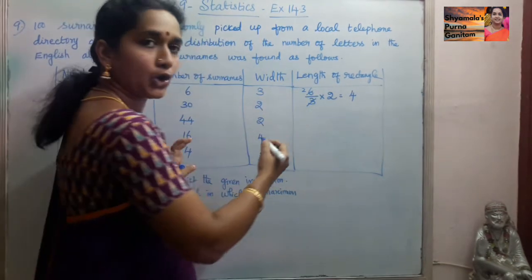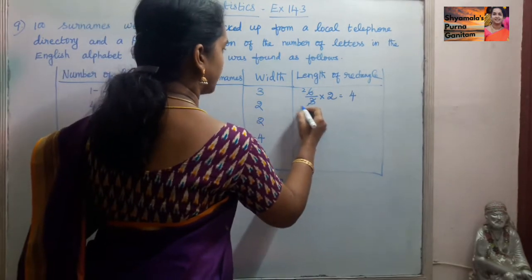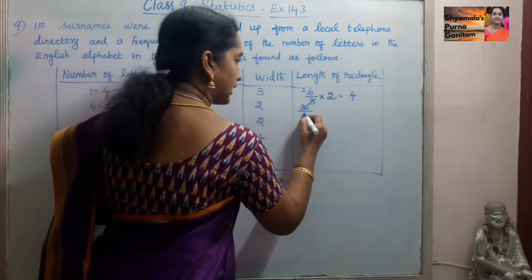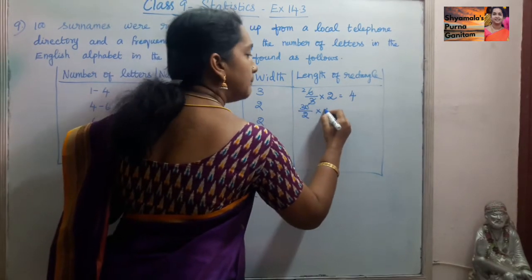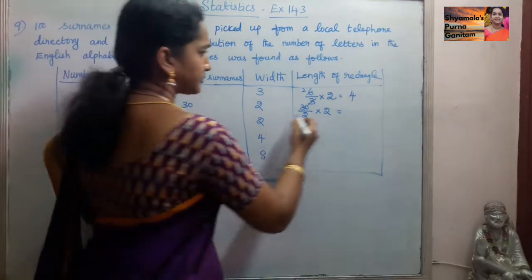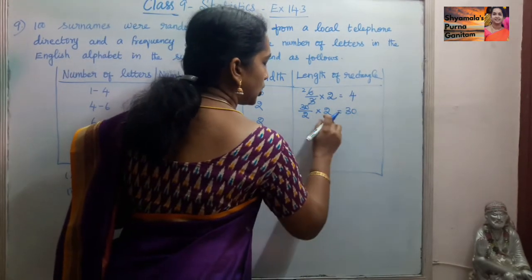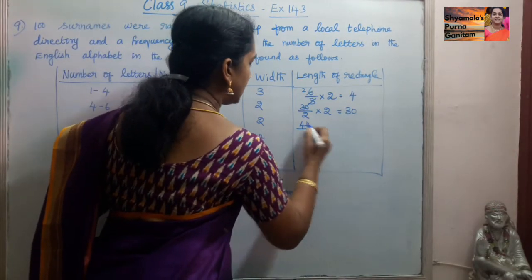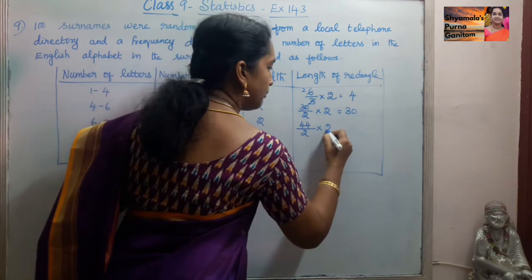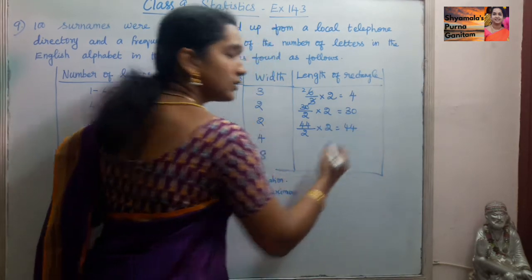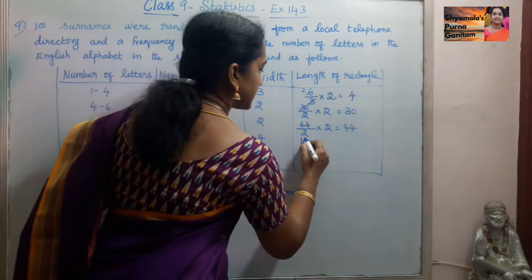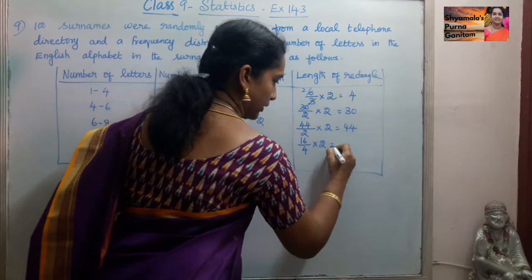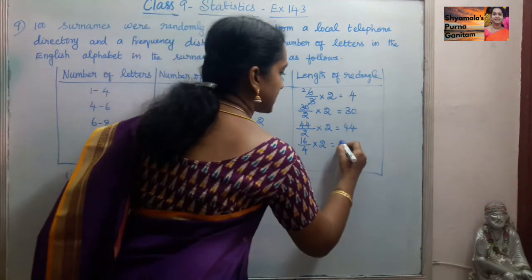We follow the same procedure for the other classes. For 4 to 6: frequency 30, divided by width 2, times minimum width 2 — the 2s cancel, so the length is 30. For 6 to 8: frequency 44, divided by width 2, times 2 — also gives 44. For 8 to 12: frequency 60, divided by width 4, times minimum width 2, gives 8.